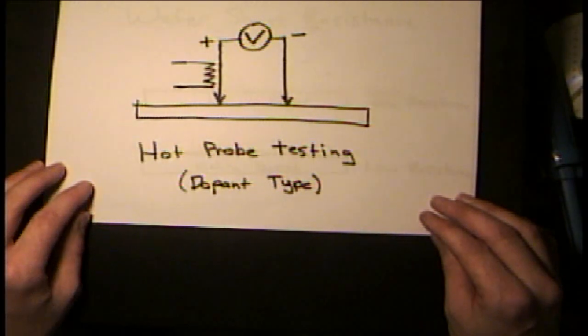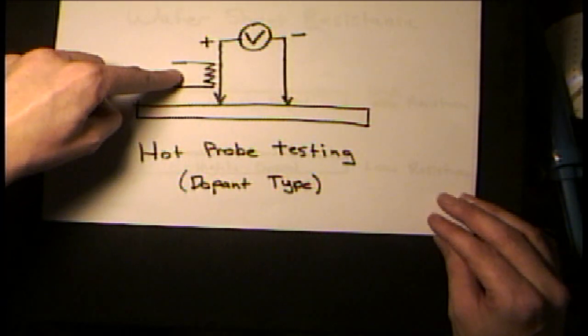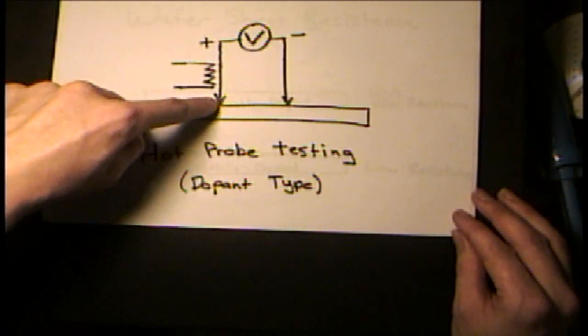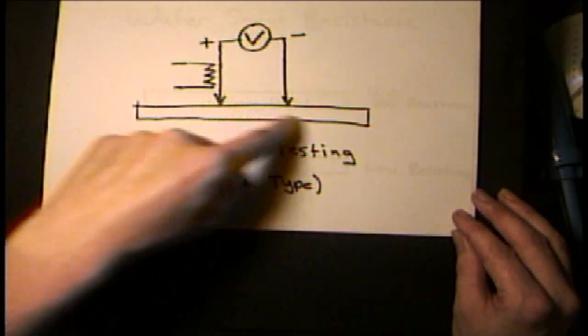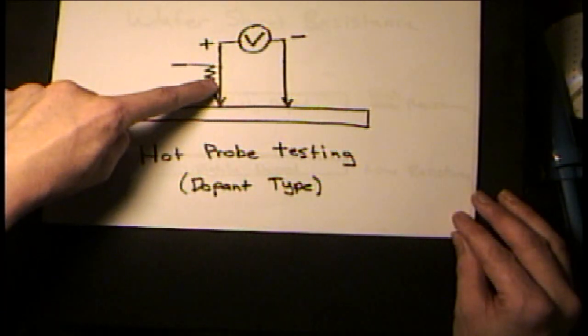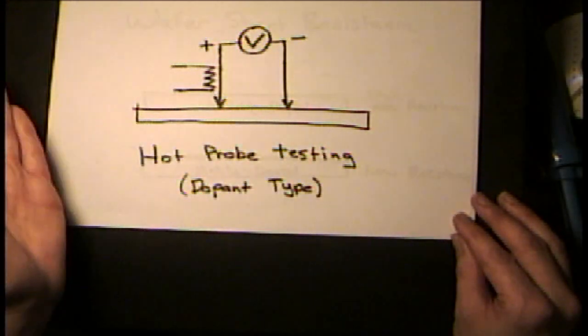You can do this with a voltmeter and a soldering iron or a heater of some sort. Basically, what you do is you push two probes into the surface of the wafer, this being the wafer here, and then you heat one of the probes and you don't heat the other probe, and you'll see the meter either swing negative or positive.